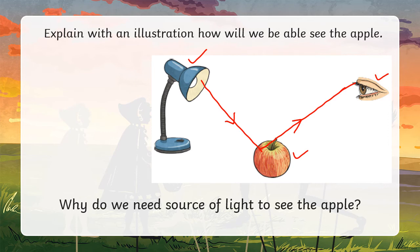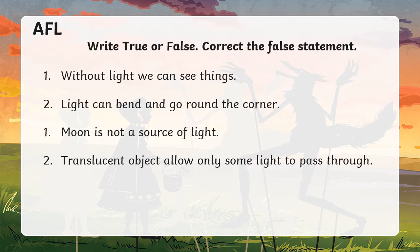Why do we need source of light to see the apple? Why do we need the lamp to see the apple? It's because apple is not a source of light. We will not be able to see apple without the source of light. We need light source. Now, AFL: without light source we can see things. Is it true? No, we cannot see without light source. This is false.